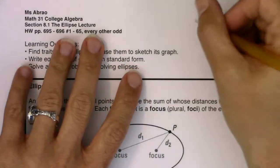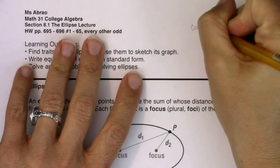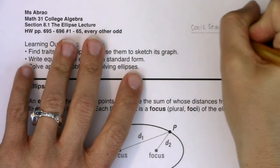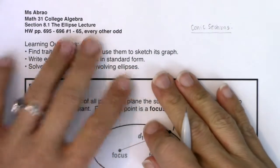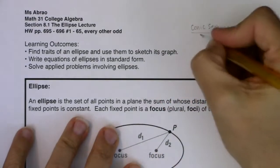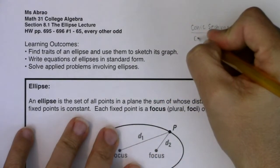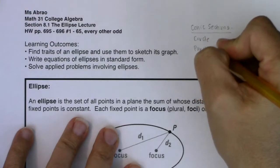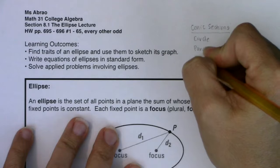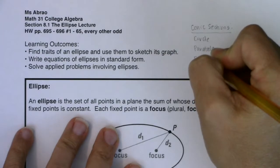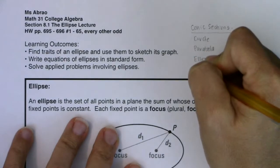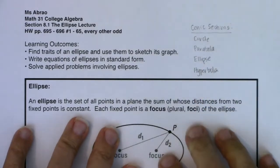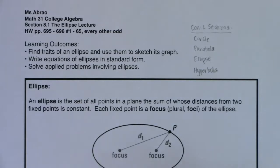When you hear me talk about conic sections, there are four conic sections you are supposed to know. Two of them I'm confident you know about: you've talked about a circle before, and even in this class we've talked about the parabola. We're going to talk about the ellipse in this section, and if you move on in this chapter, you would want to focus on the hyperbola.